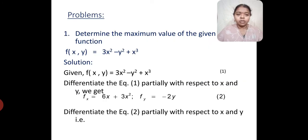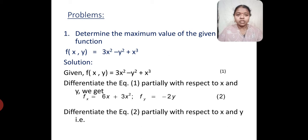First problem: determine the maximum value of the given function f(x, y) equal to 3x squared minus y squared plus x cubed. Let's call this equation 1. Let's differentiate this partially with respect to x and y. When I partially differentiate with respect to x, I get fx equal to 6x plus 3x squared. y squared differential becomes 0 as it is a constant. Next, fy becomes minus 2y. Let's call this equation 2.